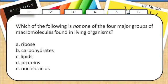1. Which of the following is not one of the four major groups of macromolecules found in living organisms? That would be ribose.